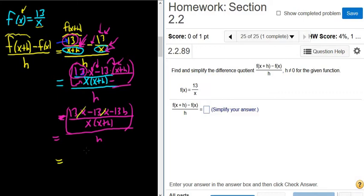These cancel. So we get negative 13h over x times x plus h. This is all in parentheses. Again, it's all over h.